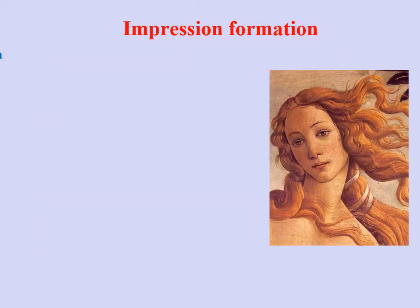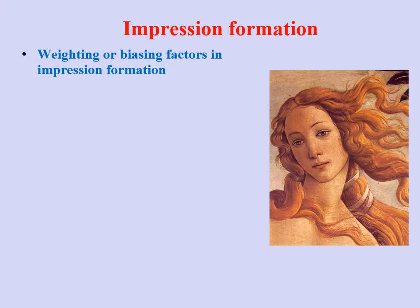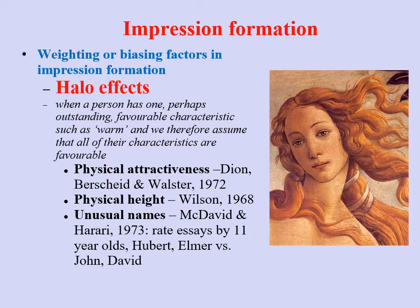Impression formation can be influenced by a number of biasing or weighting factors. One of the most important of these is halo effects. Halo effects occur when a person has one perhaps outstanding, favorable or sometimes unfavorable characteristic, such as warm or cold, and perceivers therefore assume that all of their characteristics are also favorable. In other words, we generalize from one known positive or negative feature and assume that other characteristics will be similar as well.